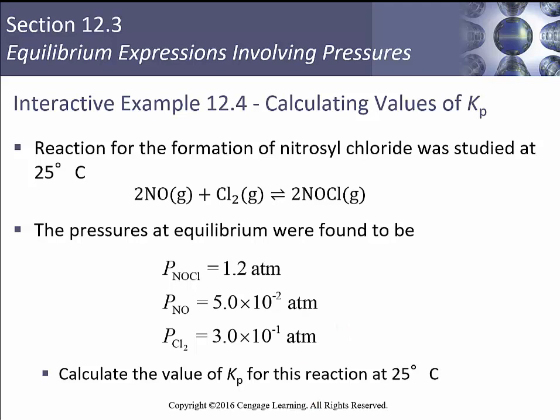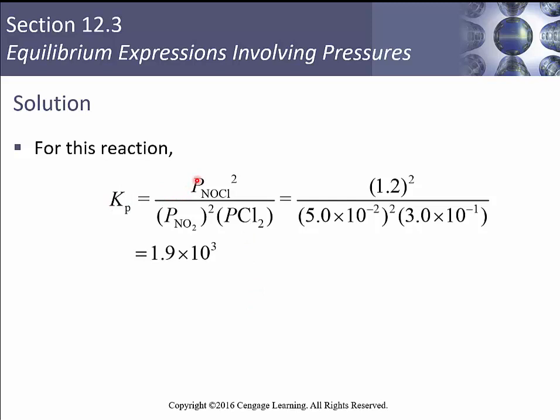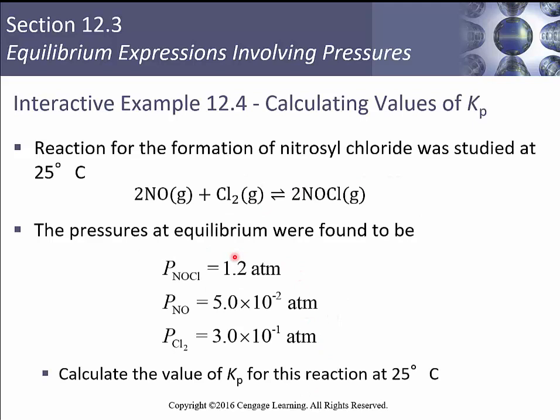We'll set it up where our KP is just going to be the pressure of the products, divided by the pressure of the reactants, raised to the appropriate exponents that are the same as the values of the coefficients. So what we did is we plugged in our numbers from before, 1.2, and then we've got 5 times 10 to the minus 2, and 3 times 10 to the minus 1.